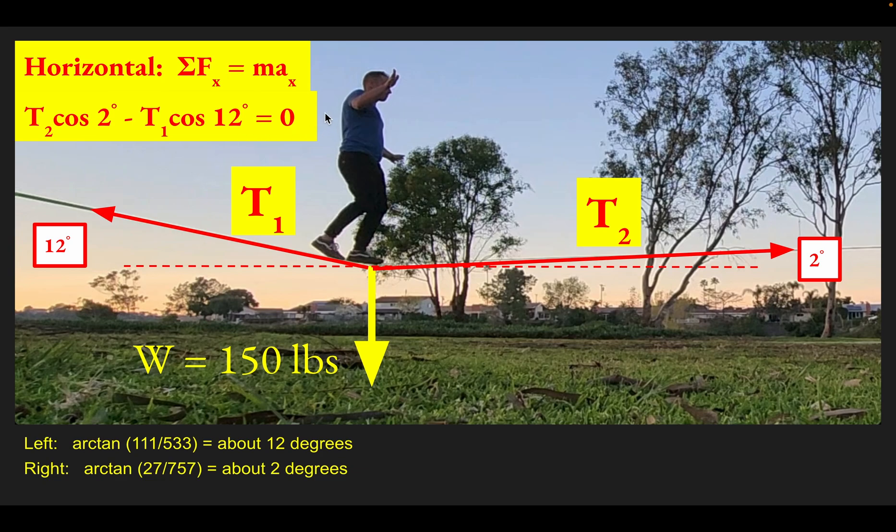We can at least solve for T2 in terms of T1. If you solve this for T2, you can find that T2 is about 98% of T1. In other words, T2 is going to be a little smaller than T1.